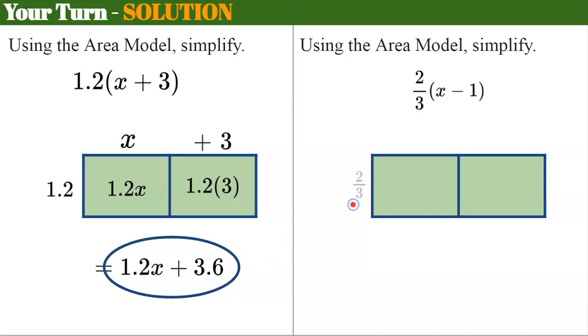The second one we're going to put 2 thirds and then x, negative 1. 2 thirds times x, 2 thirds times negative 1 gives me negative 2 thirds. 2 thirds x minus 2 thirds.